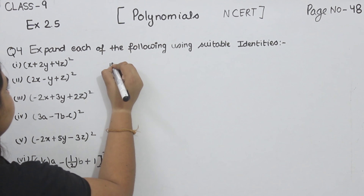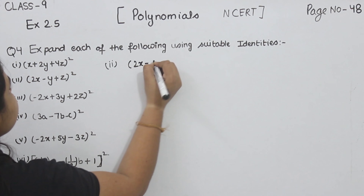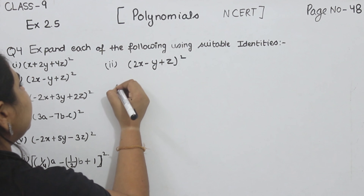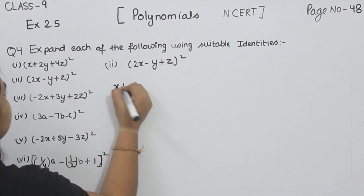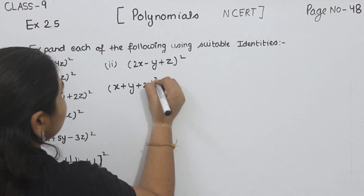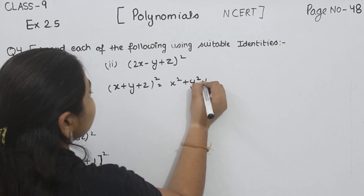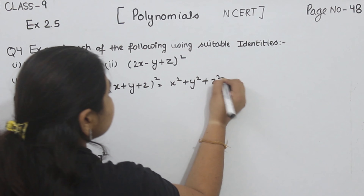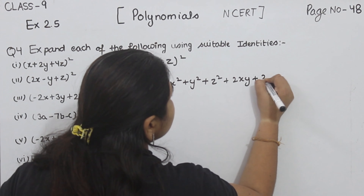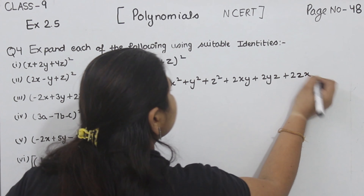Now part 2: 2X minus Y plus Z, whole square. We are going to use the identity X plus Y plus Z whole square is equal to X square plus Y square plus Z square plus 2XY plus 2YZ plus 2ZX.